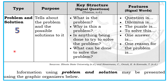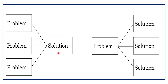The fifth type of informational text is Problem and Solution. Its purpose is to tell about a problem and the possible solutions to it. Signal questions include: What is the problem? Why is this a problem? Is anything being done to try to solve it? What can be done to solve the problem? Signal words include: the question is, dilemma is, the puzzle is, to solve this, one answer is, and one reason for the problem is. Graphic organizers may show different problems with one solution, or one problem with different solutions.